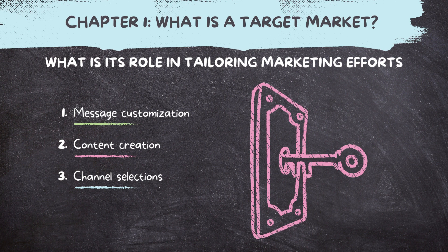Number two is content creation. When you have a specific and defined target audience, content marketing becomes way more effective because you create content that addresses the specific challenges or aspirations of your target market — crafting blog posts, videos, or social media campaigns that add real value. Number three is channel selection. Different segments may prefer different communication channels — email versus social media versus traditional advertising. You can even go further and ask which social media channels your target market is most likely to be present and engaged in, such as TikTok versus LinkedIn.